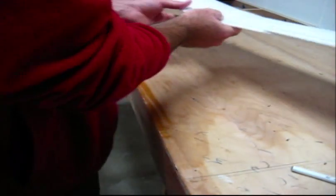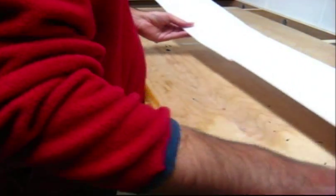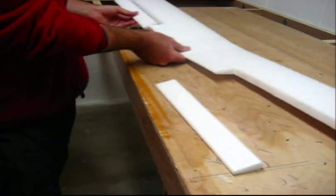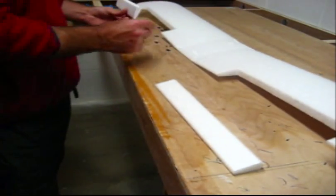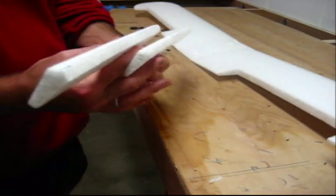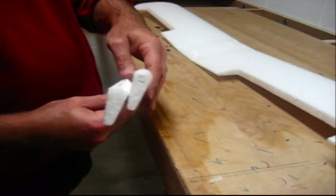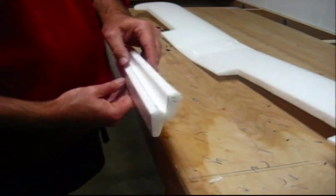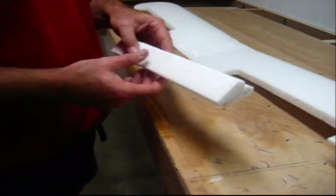Alright, we've got both of our ailerons cut out. That's that one. And the left side, we've got our angles cut. And we're ready for the next step, which is marking for the servos.